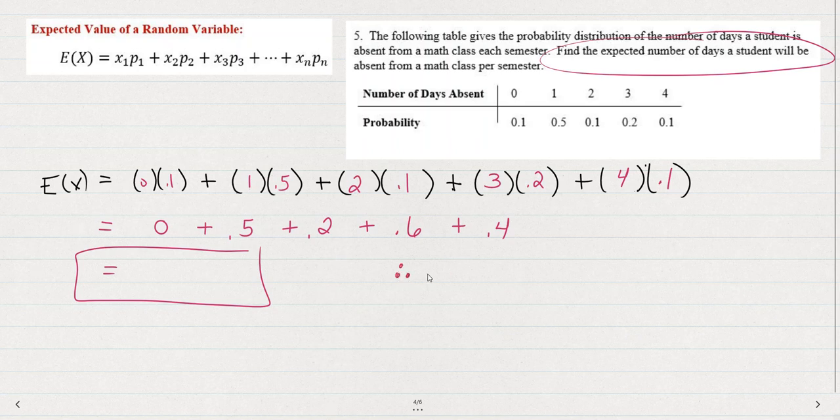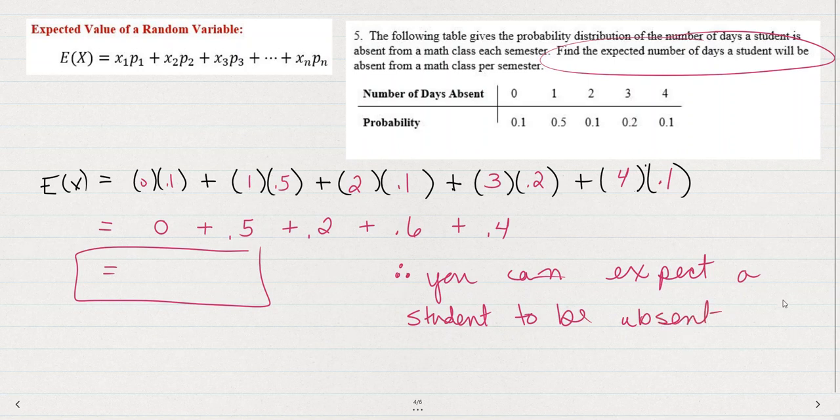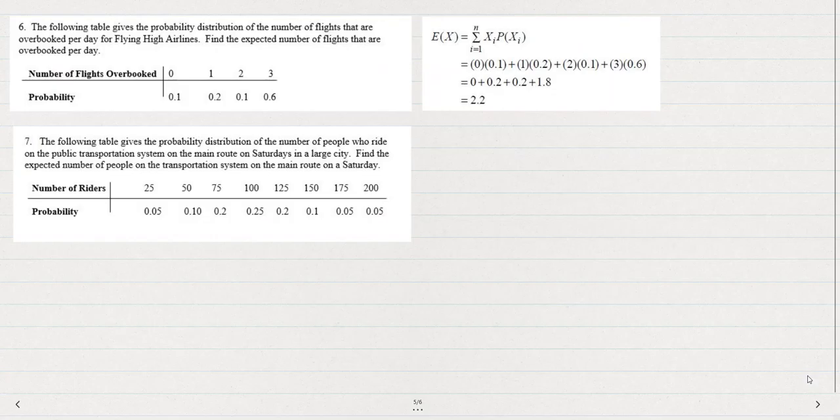Don't forget, by the way, to end the problem with a statement. So find the expected number of days a student will be absent. So we could say, therefore, you can expect a student to be absent, I'm filling the blank, blank. So, on average, you could expect a student to be absent this many days. I should have modeled that on the previous examples also. You want to make sure that you're answering the question, right?